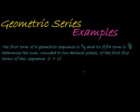Let's look at a few typical examples of how we might face geometric series in questions. In this question, they tell us the first term of a geometric sequence is 2/3 and its fifth term is 27/8. Determine the sum, rounded to two decimal places, of the first five terms of the sequence.